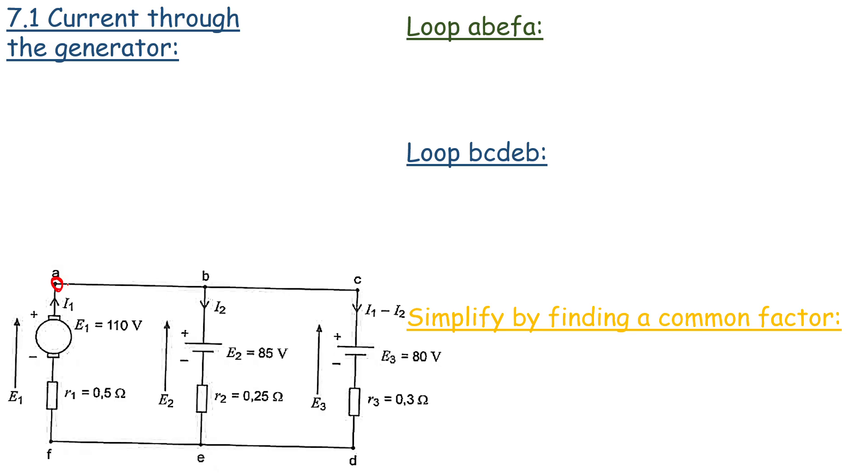We'll first take a look at our first loop which is loop A, B, E, F, A. We always look at our loop in a clockwise direction. So you'll see our first battery is in a clockwise direction.